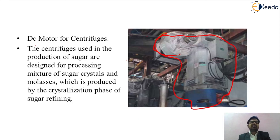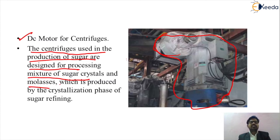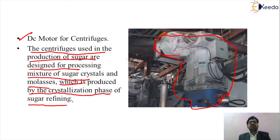In previous days, DC motors were used for centrifuges. Centrifuges used in sugar production are designed for processing a mixture of sugar crystals and molasses produced during the crystallization phase of sugar refining. In previous days DC motors were preferred for centrifuges, but nowadays these are replaced by AC motors.